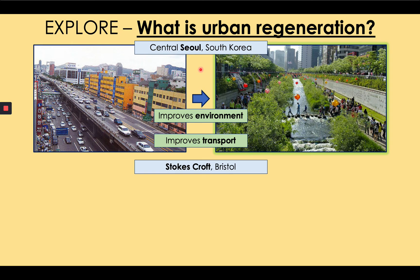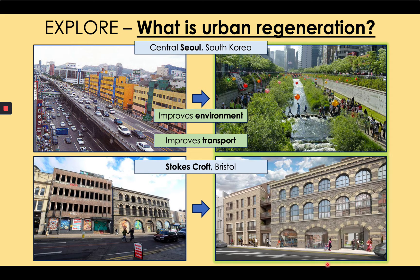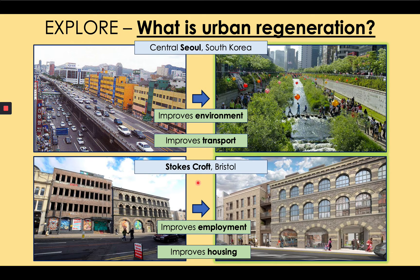Here's another example from Stokes Croft in Bristol — the old carriage works in a place called Westmoreland House. Bristol plans to convert it into a modern development. This will improve employment opportunities by creating modern offices with high-tech services and infrastructure such as internet and renewable energy, attracting businesses to fill the office space. By creating affordable homes where people who work in the tertiary sector can live, it will attract skilled people and so improve employment in the area. Additionally it improves housing, as people cannot live here right now because there are lots of derelict buildings. These two examples show the four key features of urban regeneration: improving the environment, transport, employment, and housing.